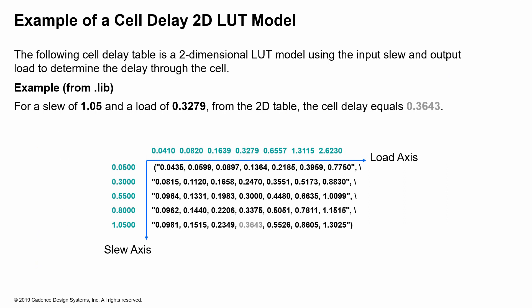Here we show an example of a 2D lookup table model. And if you look at the .lib or the library itself, the slew is plotted on the Y axis here, and the load is plotted on the X axis. So index 1 would then be the load and index 2 would be the slew. And so for an example, for a slew of 1.05 and for a load of 0.3279, it's showing 0.3643. So you would determine that based on the lookup table, and that's what the tool will also do.